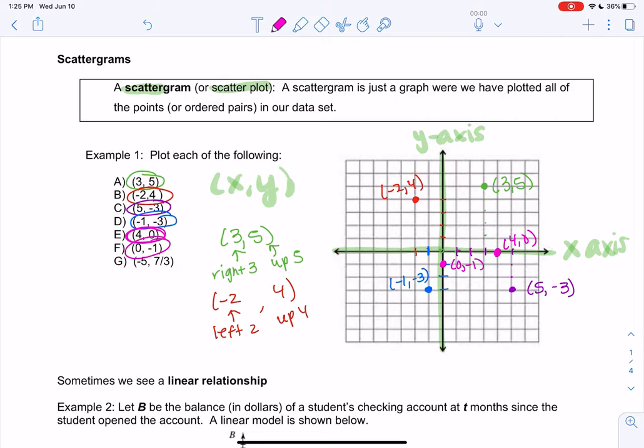And then negative 5 and 7 thirds. I don't really know where 7 thirds is. It's not 7, it's not 3. So you can do 7 divided by 3 on your calculator, and you get about 2.33. The 3 goes on forever, but we'll just estimate where that is.